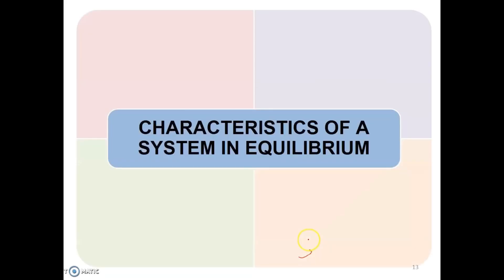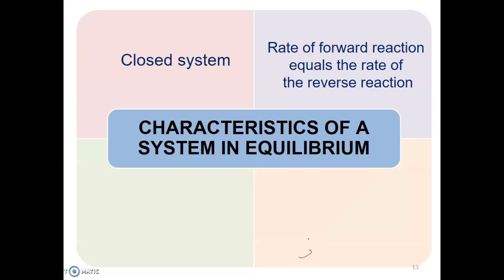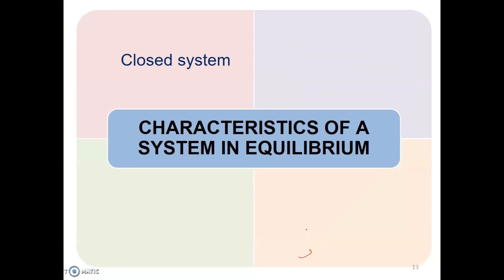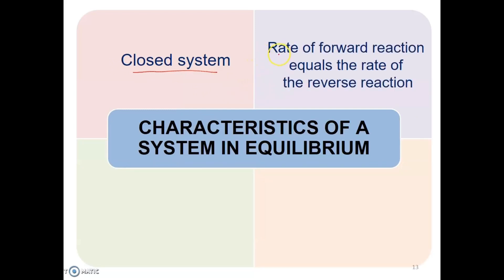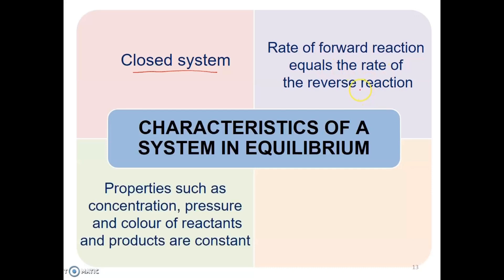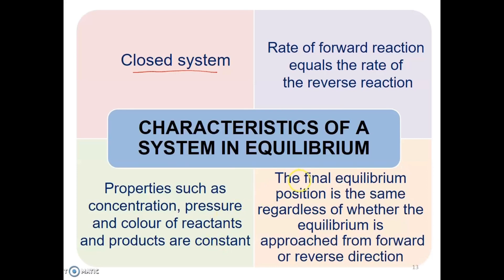This slide is very important. There are four characteristics of a system in equilibrium. First, the reaction must occur in a closed system. Second, the rate of the forward reaction must equal the rate of the reverse reaction. Third, properties such as concentration, pressure, and colour of the reactants and products are constant and remain unchanged. Fourth, the final equilibrium position is the same regardless of whether equilibrium is approached from the forward or reverse direction.